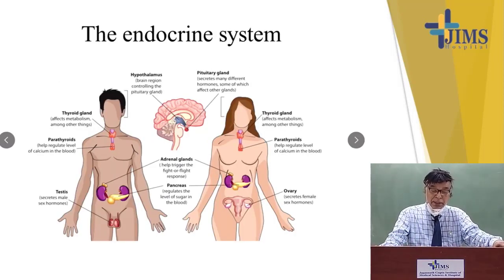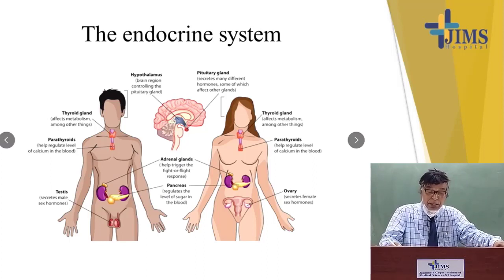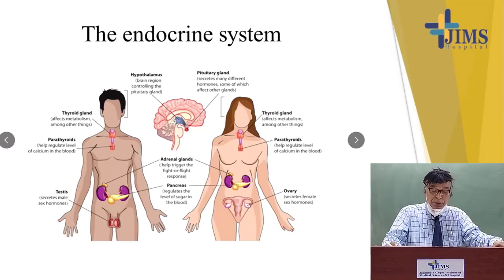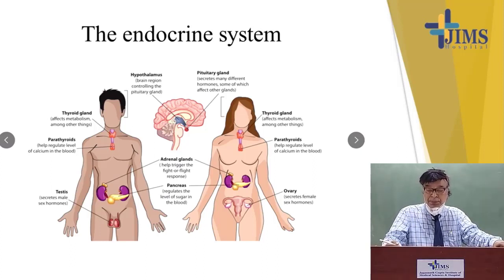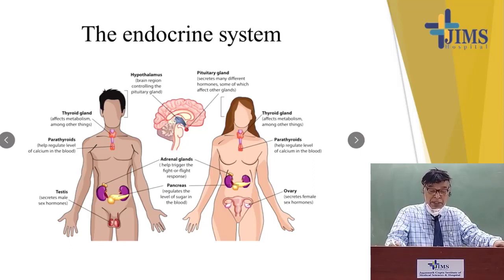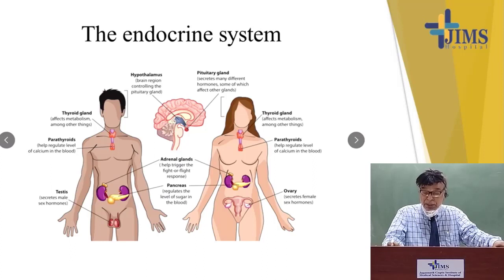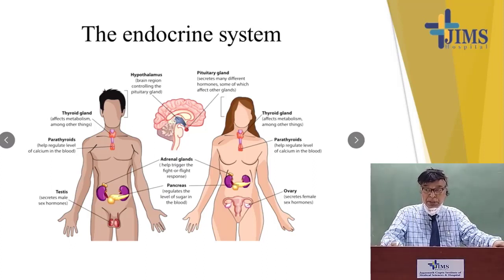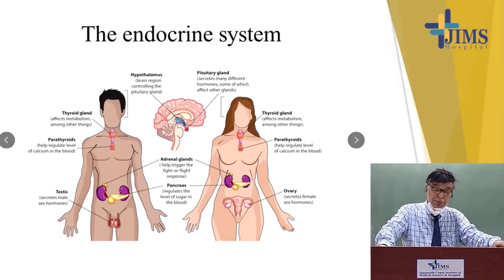Every person has this endocrine system in the body. The most important is the hypothalamus, and you can see this has been taught even in higher secondary classes or in first and second year MBBS classes. Thyroid, adrenal, hypothalamus, parathyroid, ovaries, testes, adrenals — these are all organs depicted in a pictorial representation of the endocrine system.